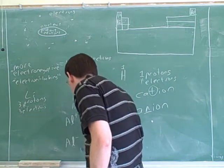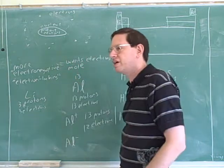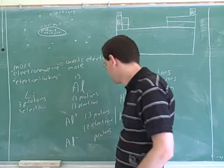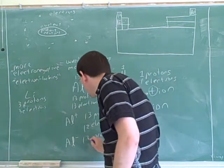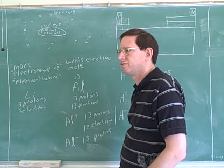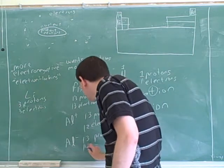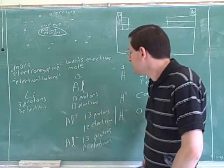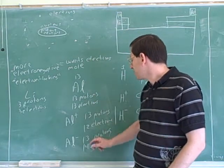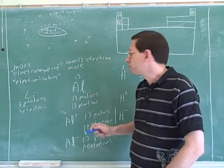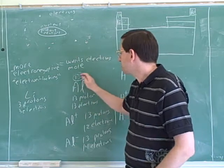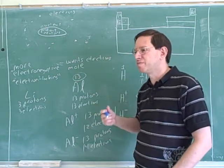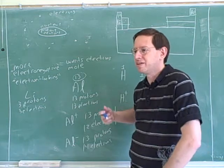On the other hand, suppose I wanted to make aluminum minus. How many protons would that have? 13. And how many electrons? 14. So the thing we see here is that aluminum always has 13 protons. That's the real reason why this is called the atomic number — because the number of protons determines which element you are.